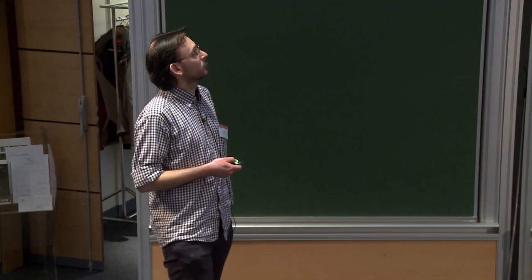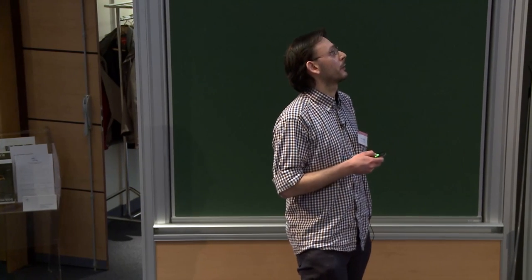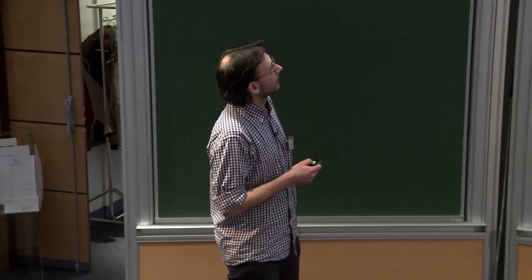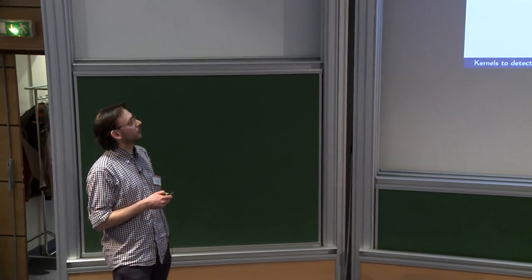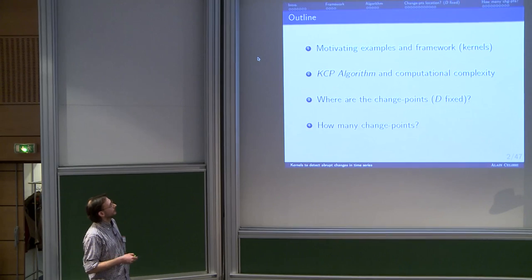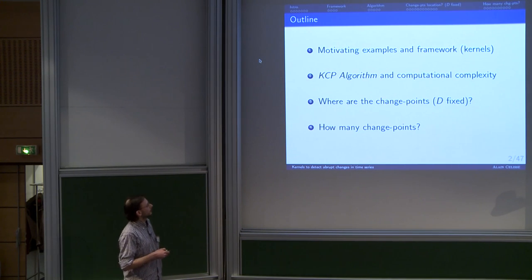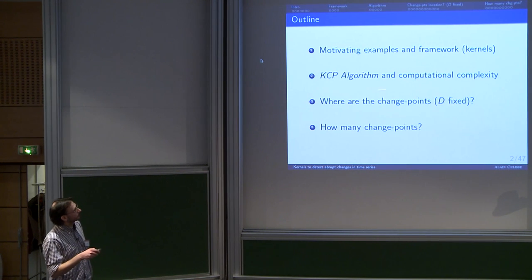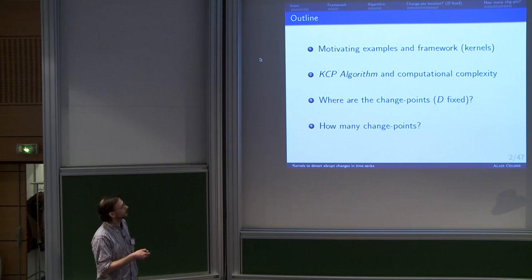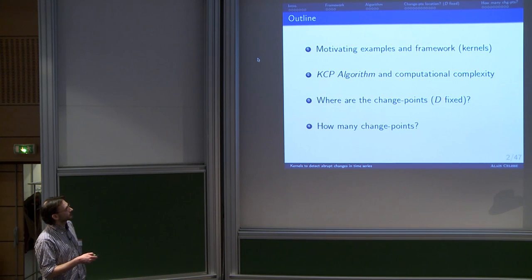Let's have a look at the outline of the talk. First, I will introduce some motivating examples and also the framework we'll use, in particular the kernels we'll use. Then I will give details about the algorithm for detecting change points, which is called KCP, and discuss some computational aspects. Then we'll discuss the statistical part, which is divided into two parts: first, assuming the number of segments is known, where are the change points? And second, how many change points do you want to detect?